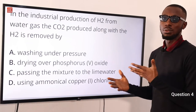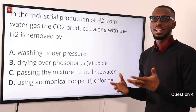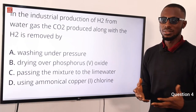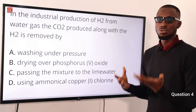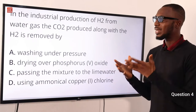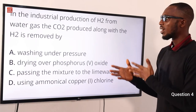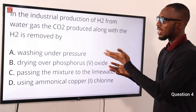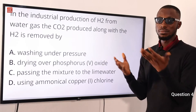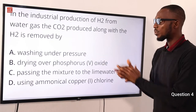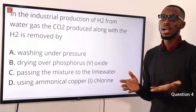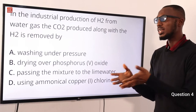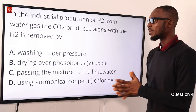Water gas is a combination of carbon monoxide (CO) and hydrogen gas. Excess steam is then introduced. At this point, you pass the excess steam mixed with the water gas over iron(III) oxide or chromium(III) oxide.